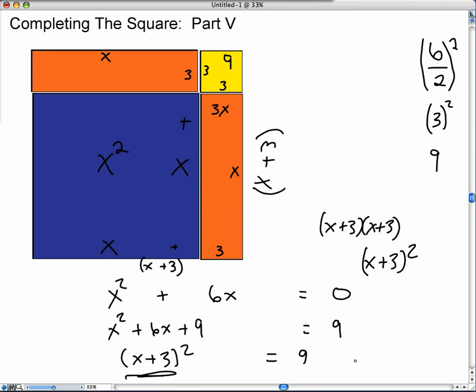Because on the right side of the equation, you only have a number, a value. The whole idea is to isolate x. But it's very ingenious how completing the square, you can visually see that you are creating a square.